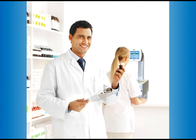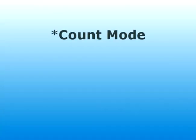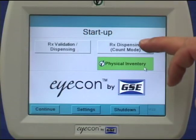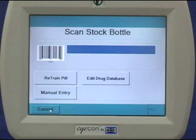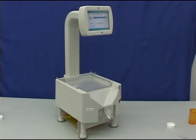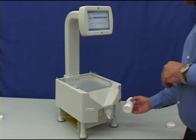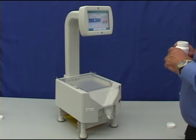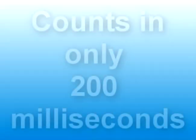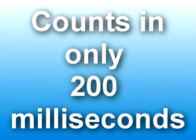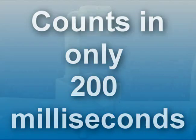Let's take a look at the three modes of operation in the ICON. First is the count mode. Be sure you're in the count mode by pressing the count mode button and then the continue button. Next, scan the stock bottle and pour the pills onto the counting platter. The ICON's vision system will count the pills in 200 milliseconds and display the count.